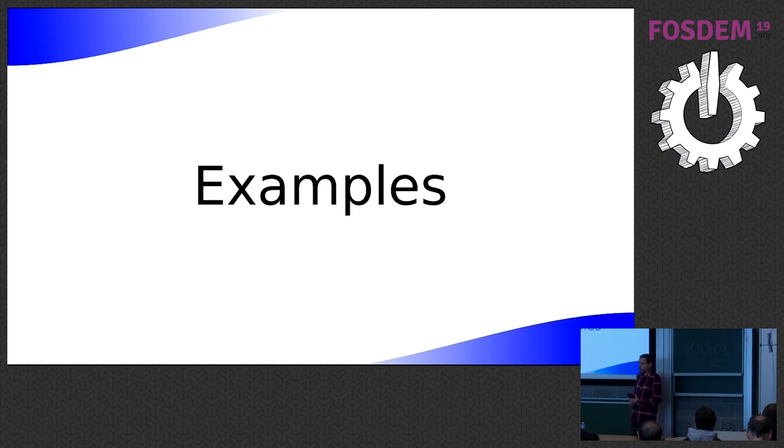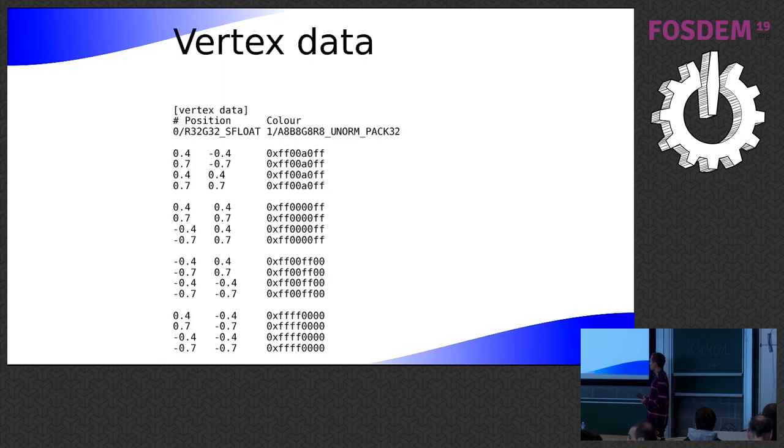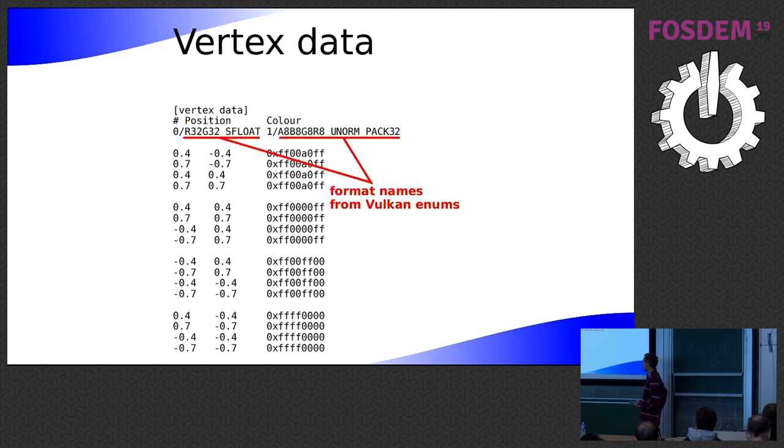So some more examples to show some more features of what vk runner can do. So as well as sections for writing the shaders and the test section, and the same as with shader runner, there's a section for writing your vertex buffer. So at the start of the section there's a header to describe the attributes. So the first part of each attribute is the location, because in Vulkan you have to give an explicit location to each attribute. And then the second part is the format name.